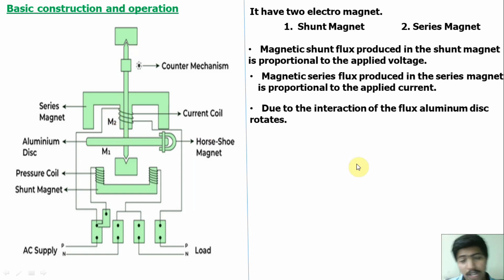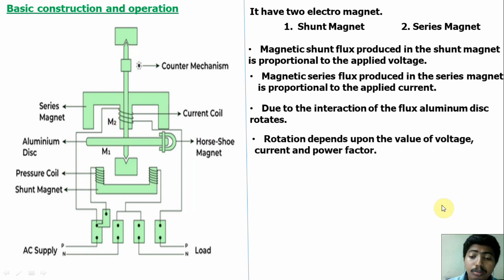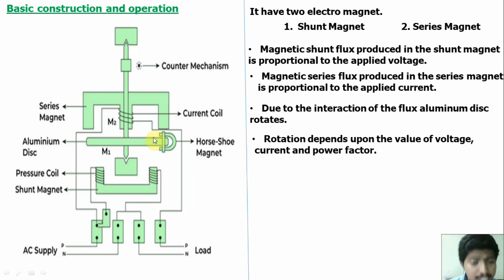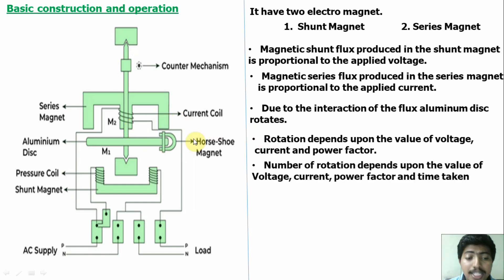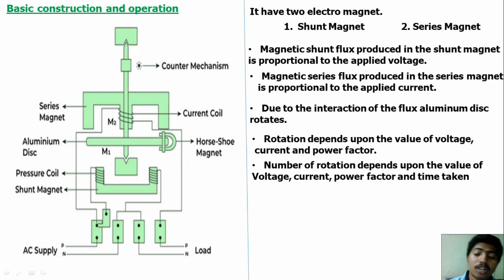This is motor action. The rotation depends on the value of voltage, current, and power factor. Power factor means the angle between the voltage and current. The number of rotations depends upon the value of voltage, current, power factor, and time taken. That is called energy.